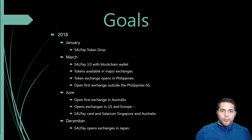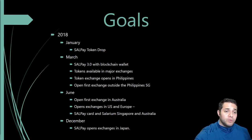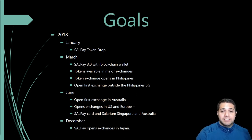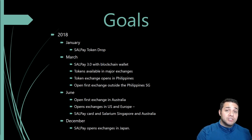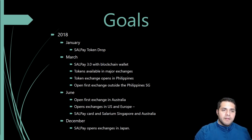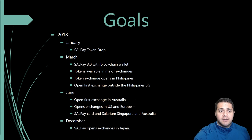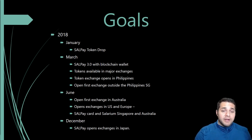Solarium's roadmap revolves around a few huge months. In January 2018, we get the token drop. In March, we have version 3.0 with blockchain wallet, tokens available on major exchanges — they're setting aside 10% of their funds to get on major exchanges, which I find super impressive — plus their token exchange opens in the Philippines and their first exchange outside the Philippines, likely Singapore. In June, they open exchanges in Australia, the US, and Europe, with the Salpay card launching in Singapore and Australia. In December 2018, they open in Japan.